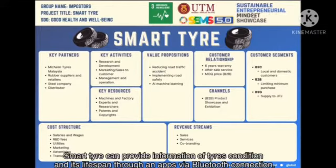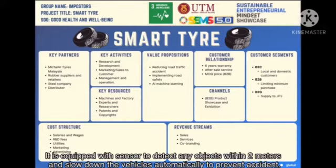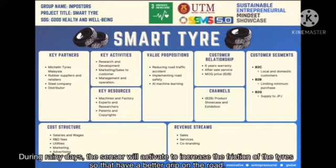SmartTire can provide information on tyre condition and its lifespan through an app via Bluetooth connection. It is equipped with sensors to detect any objects within 2 meters and slow down the vehicle automatically to prevent accidents. During rainy days, the sensor will activate to increase the friction of the tyres so that they have a better grip on the road.